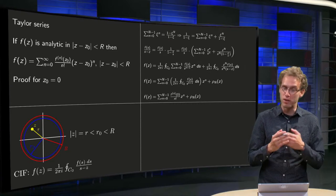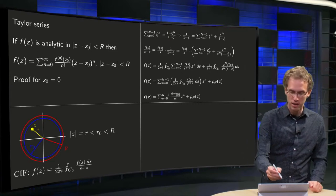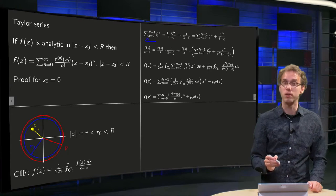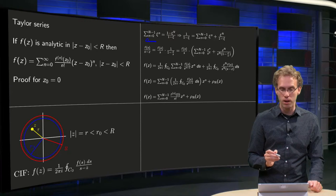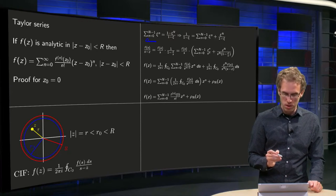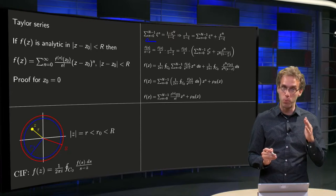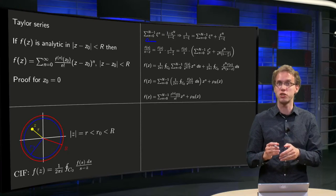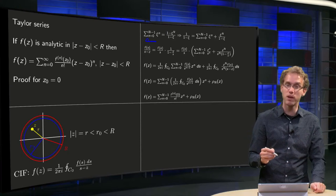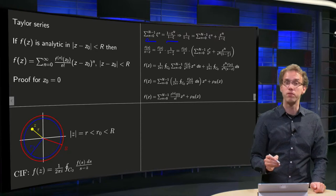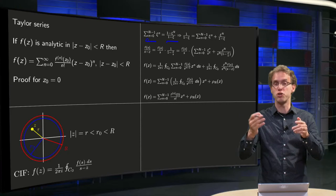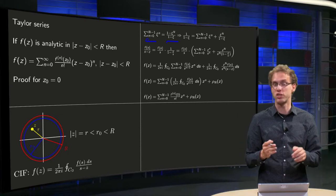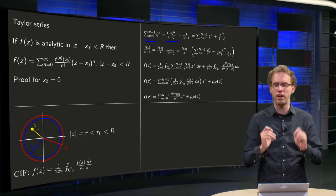We know if you have a complex number ξ, that sum n from 0 to capital N minus 1 of ξ to the power n equals 1 minus ξ to the power N divided by 1 minus ξ. So no problems here, this is just a finite sum.